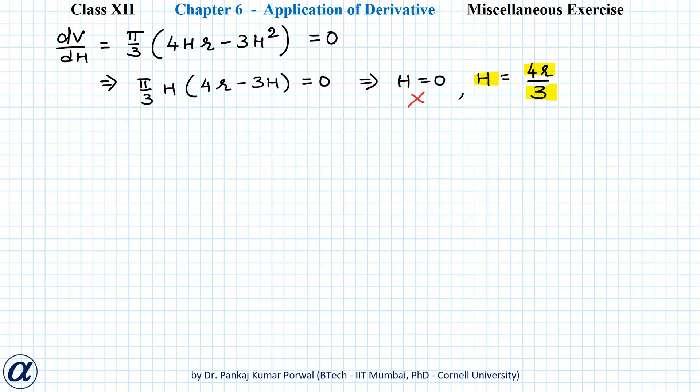The second derivative of V can be found by differentiating dV/dH, so d²V/dH² will be equal to π/3(4r - 6H).